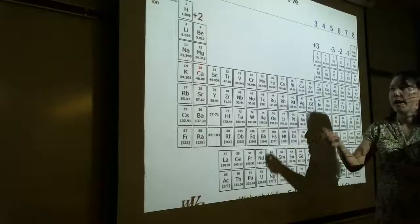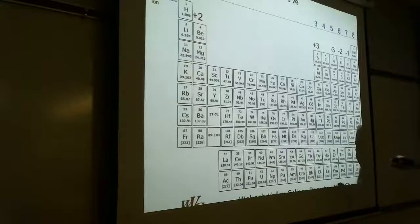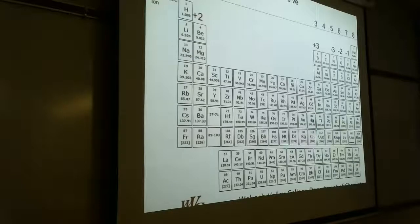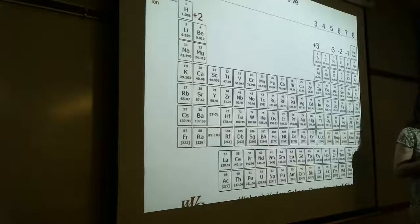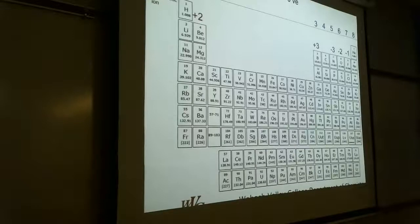Group two: it's easier to lose two than to gain six — electrons are negative, so losing them gives a charge of plus two. Group three: easier to lose three than gain five, giving a charge of plus three. These groups on the left side of the periodic table all lose electrons to form positively charged cations.